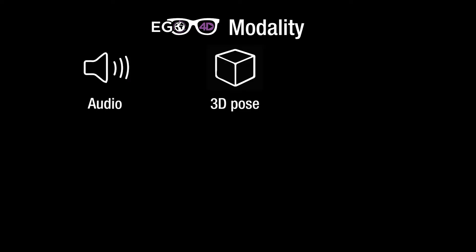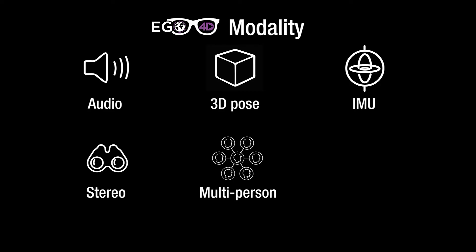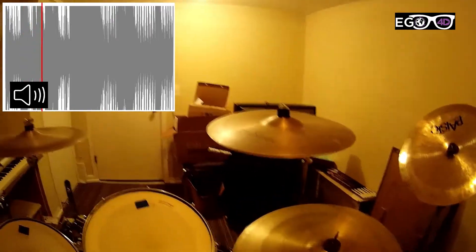Ego4D data is multimodal. It includes audio, 3D pose, inertial measurement, stereo videos, synchronized multi-person videos, and gaze measurement. Audio is accompanied by the video facilitating audio-visual perception.